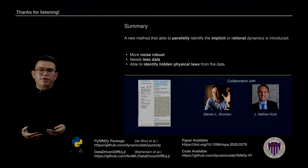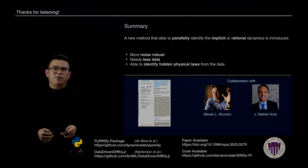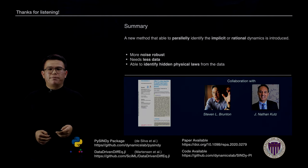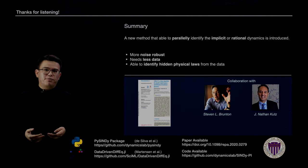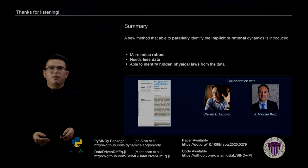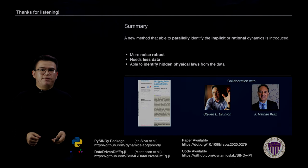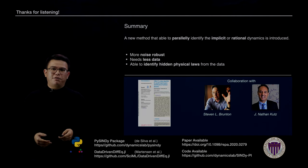In summary, we developed a new algorithm called CINDY-PI that can parallelly solve for implicit or rational dynamics. Moreover, it is more noise robust and requires fewer data points. Finally, it can identify physical laws from data. If you're interested in our papers, please feel free to check them out, and if you want to use CINDY-PI for your research, please check out the packages below. I'd like to thank my collaborators, Professor Steve Brunton and Professor Nathan Kutz at the University of Washington. Thank you all for listening.